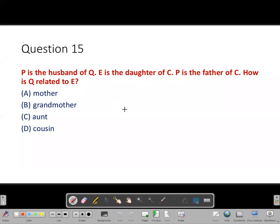Dear students, let us draw the family tree now. P is the husband of Q, which means P and Q are married. P is male and Q is female.